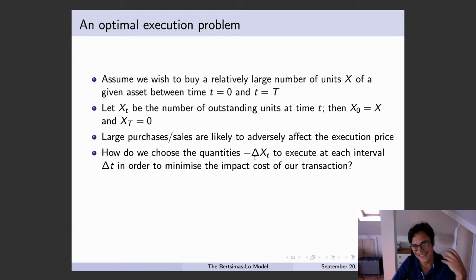So here I have a minus sign because this goes from a positive number to zero. So minus ΔX_T is the actual quantity, say 20, 30, whatever you're going to be executing in each interval, ΔT.